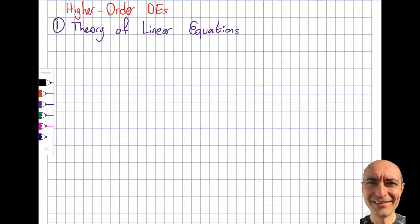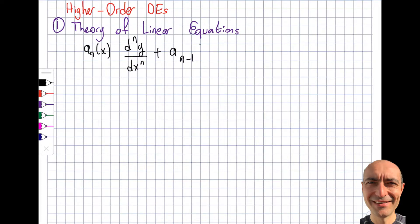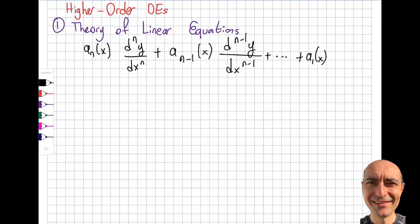The first thing I want to look at is defining some basic things. I touched upon this when I started — we discussed what a linear equation is, so I want to revisit that. Here is how a differential equation needs to look for it to be linear. The left-hand side has terms like a₁(x) dy/dx plus a₀, and the right-hand side is equal to g(x).